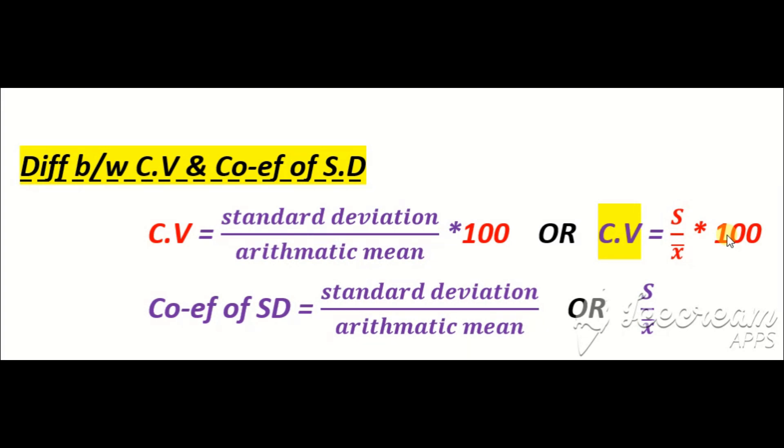Coefficient of standard deviation is standard deviation divided by arithmetic mean. Just s divided by x̄ is called coefficient of standard deviation.